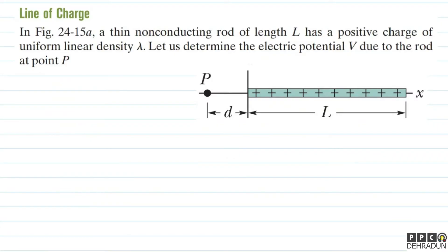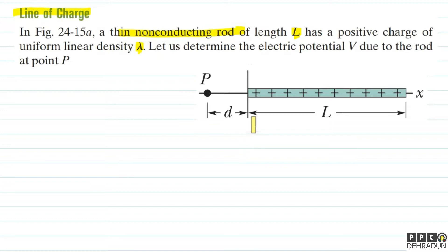Let's understand this topic through an example — the line of charge. Here we have a thin non-conducting rod of length L with uniform linear charge density lambda. We need to find the electric potential V due to the rod at point P.